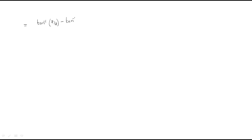Substituting ω = 2: φm = tan⁻¹(2/2) − tan⁻¹(2/1) = tan⁻¹(1) − tan⁻¹(2) = 45° − 63.43° = −18.43°.